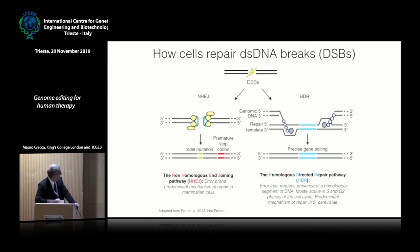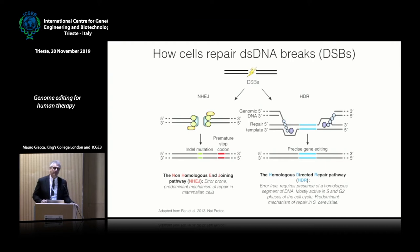A double-strand break in cells can be recognized by proteins like the Ku heterodimer, DNA-PK catalytic subunit, which direct repair through a process that introduces mutations through insertions, mismatches, or deletions. This is an error-prone pathway and the predominant pathway occurring in all cells — 90% of repair occurs through this pathway, and it is the only pathway known to occur in post-mitotic cells. Remember that most cells in our body are post-mitotic: cardiomyocytes, retinal cells, neurons, endothelial cells, and 98% of peripheral blood lymphocytes are post-mitotic.